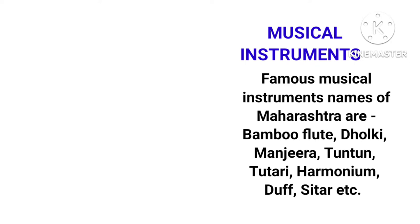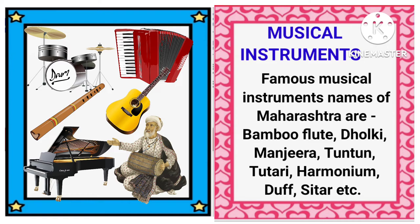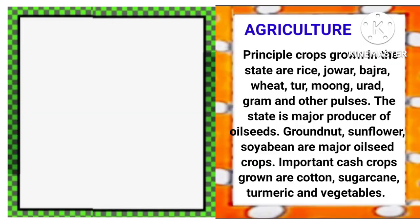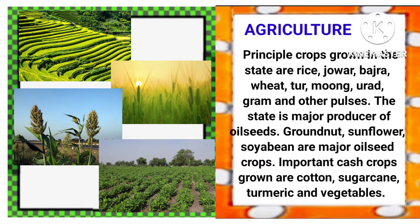Musical instruments: Famous musical instruments of Maharashtra are Bamboo Flute, Dolki, Manjeera, Tuntun, Tutari, Harmonium, Daaf, Sitar, etc. And here are some pictures of musical instruments of Maharashtra state. Agriculture: Principal crops grown in the state are Rice, Jowar, Bajra, Wheat, Tuwar, Mood, Oda, Gram and other pulses. The state is a major producer of oil seeds. Groundnut, sunflower and soya bean are major oil seed crops. Important cash crops grown are cotton, sugarcane, turmeric and vegetables. And here are some pictures of agriculture.